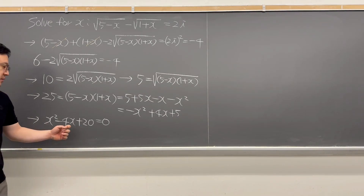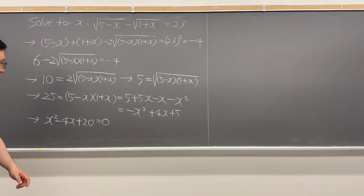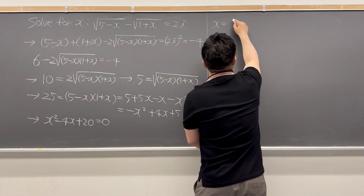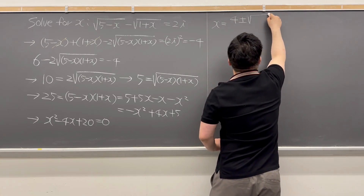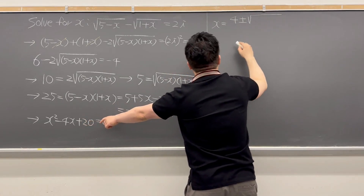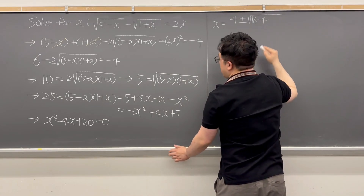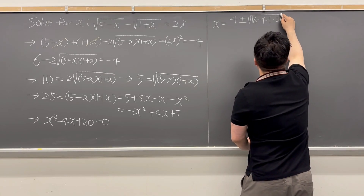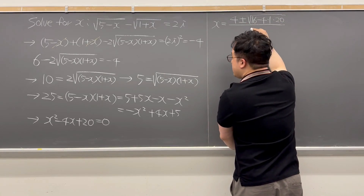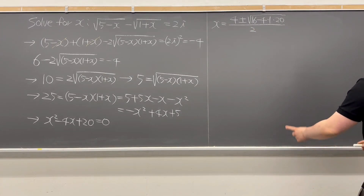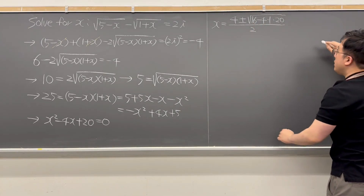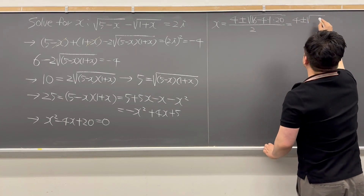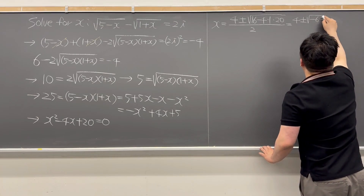We can't factor this nicely with integers, so we need to use the quadratic formula. x equals 4 plus or minus the square root of b squared — that is 16 — minus 4 times the leading coefficient 1 times the constant 20, all divided by 2 times the leading coefficient 2. Inside the square root we get 16 minus 80, which is negative 64, giving us (4 plus or minus the square root of negative 64) over 2.